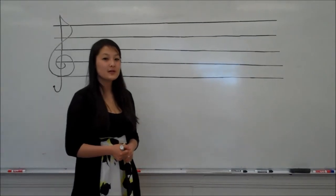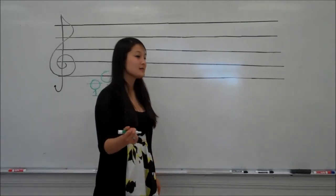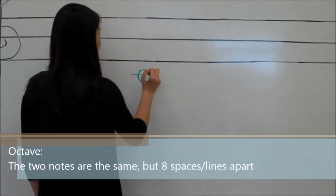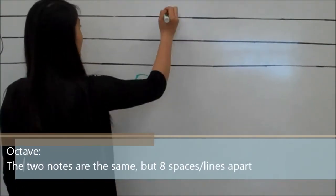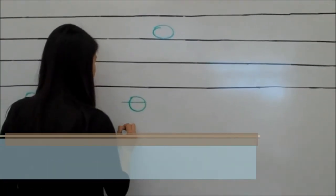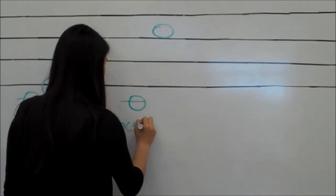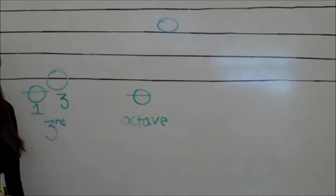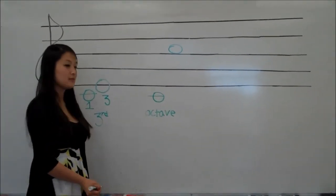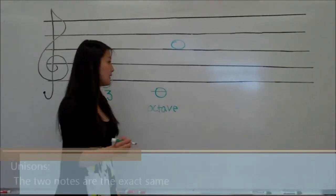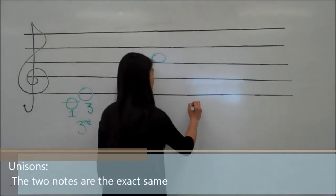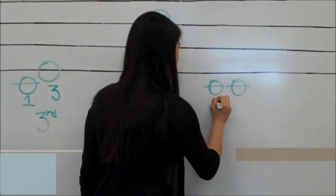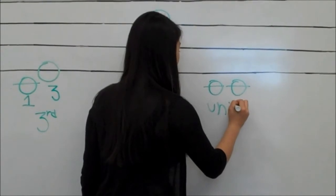There are a few other types of intervals, such as an octave, which would be from this C to this C. And there are also unisons, which is basically when the note is repeated. So, if you had a C and then another C right next to it, that would be a unison.